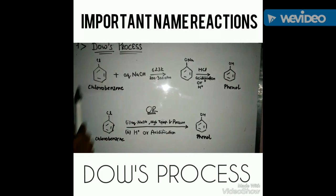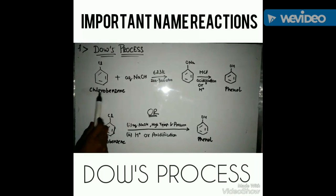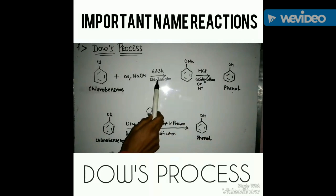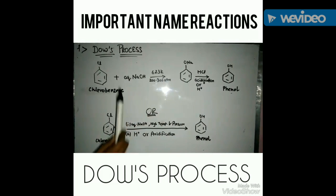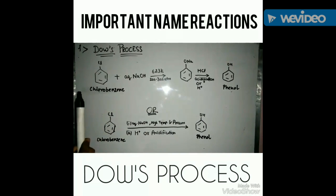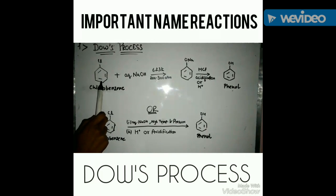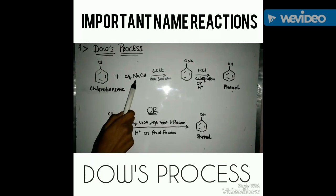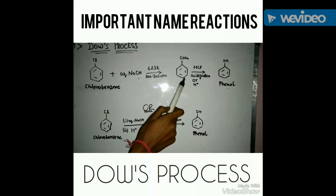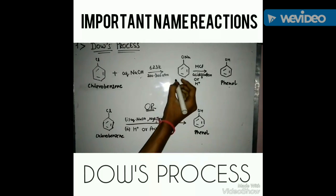First is Dow's Process. The conversion of chlorobenzene into phenol under drastic conditions is known as Dow's Process. When chlorobenzene reacts with aqueous NaOH, it yields a salt, sodium phenoxide.